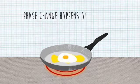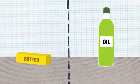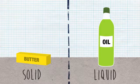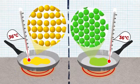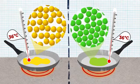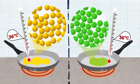Phase change happens at different temperatures for different substances. Sometimes two substances at the same temperature can be in different phases. And sometimes two substances at the same temperature can be in the same phase. It just depends on the temperature and the substance.